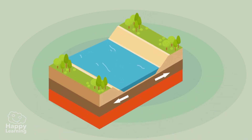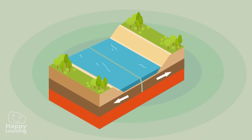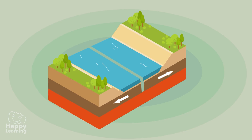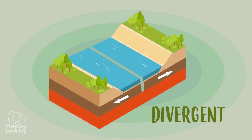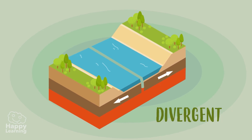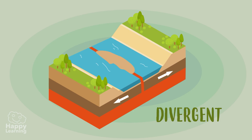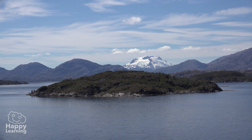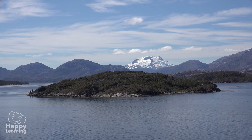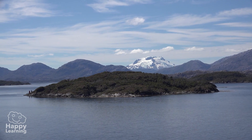When the tectonic plates shift in opposite directions, they are called divergent plate boundaries and the magma rises towards the surface, cools down and dries. Then a new floor is formed, like these islands you can see here.